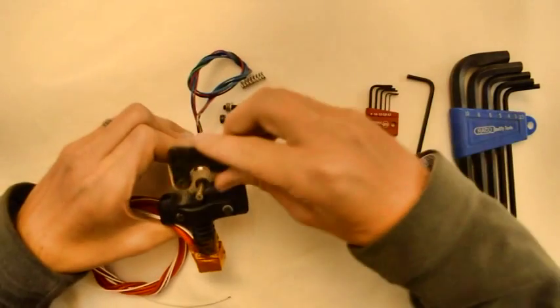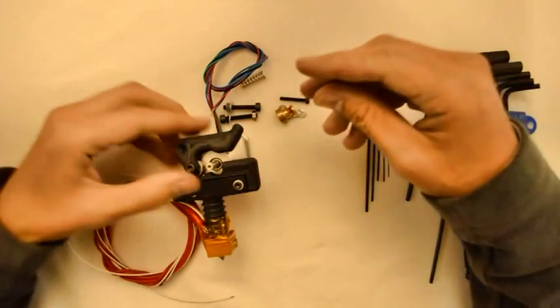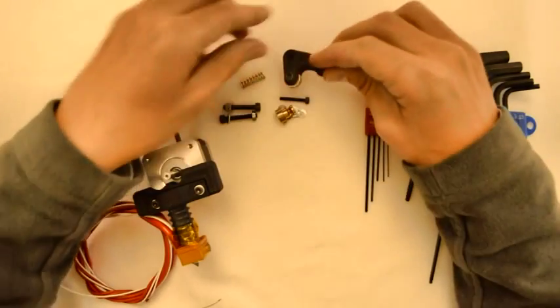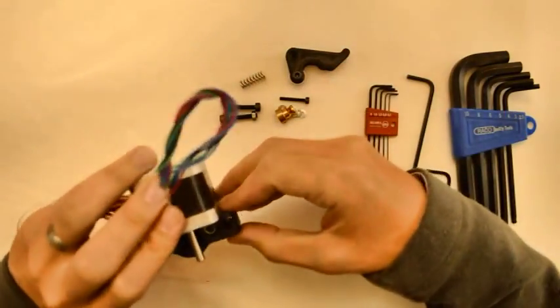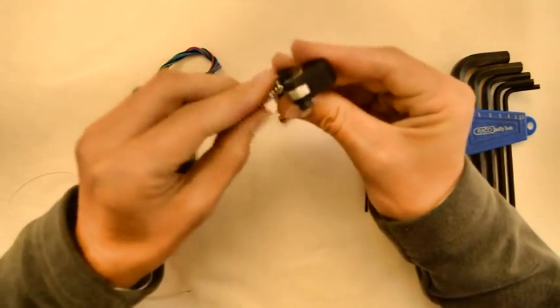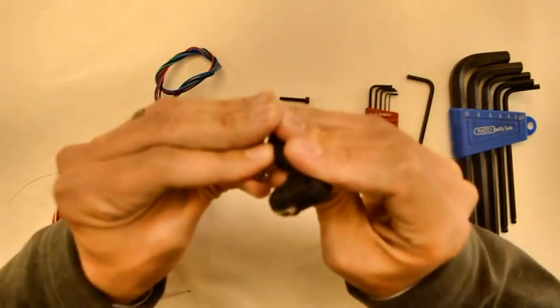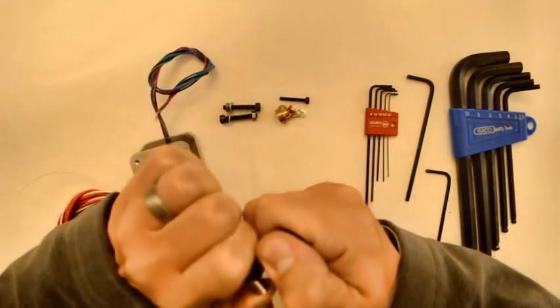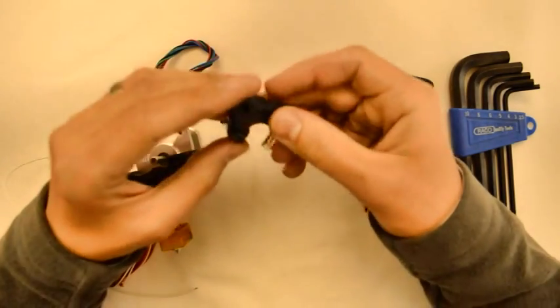The next step is to assemble the lever onto the hotend. Now how we do this is we take the spring and it goes into that hole in the lever. You can press it right down to the bottom.